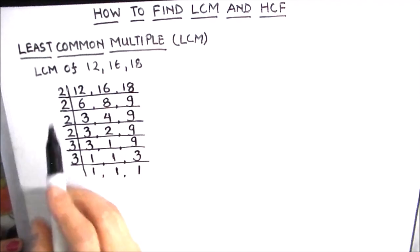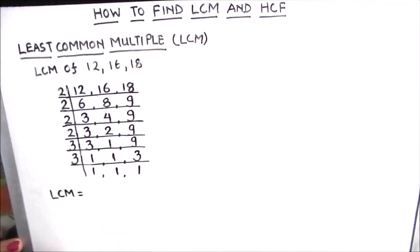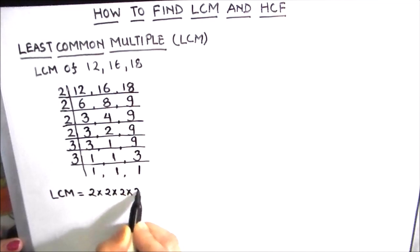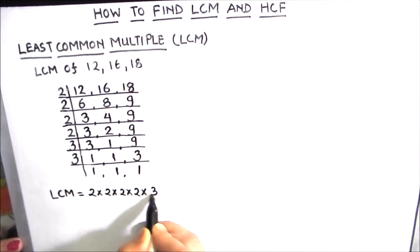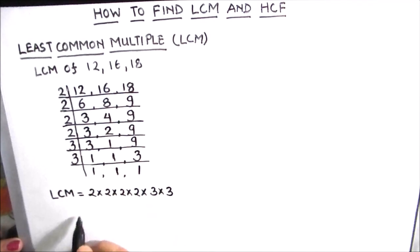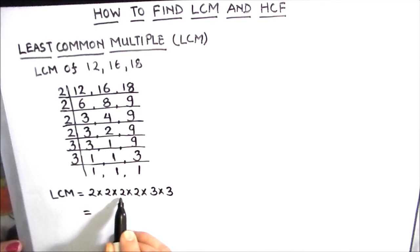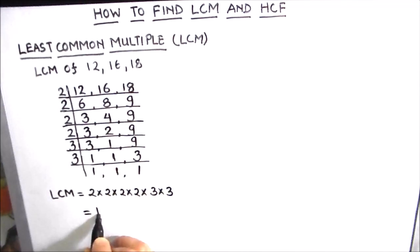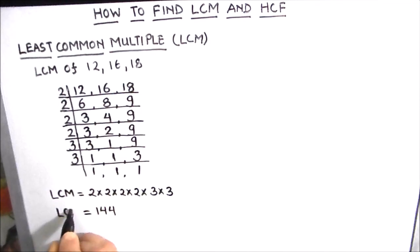For finding the LCM we take the product of all the numbers on the left-hand side of the ladder. So LCM equals 2 times 2 times 2 times 2 times 3 times 3. That is: 2 times 2 is 4, times 2 is 8, times 2 is 16, times 3 is 48, times 3 is 144. So the LCM of 12, 16, and 18 is 144.